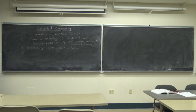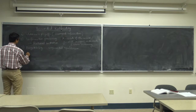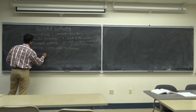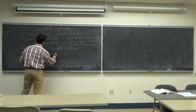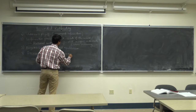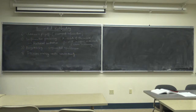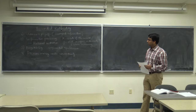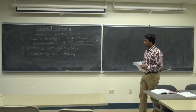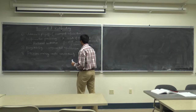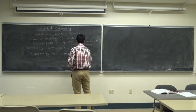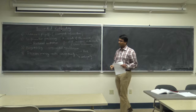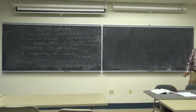Fourth is decision making under uncertainty. Sequential equilibrium is something that we have already talked about. Now let's move on to the next topic which is decision making under uncertainty. Uncertainty can be of two types: one is risk and one is ambiguity. Let's think about what is the difference between risk and ambiguity.